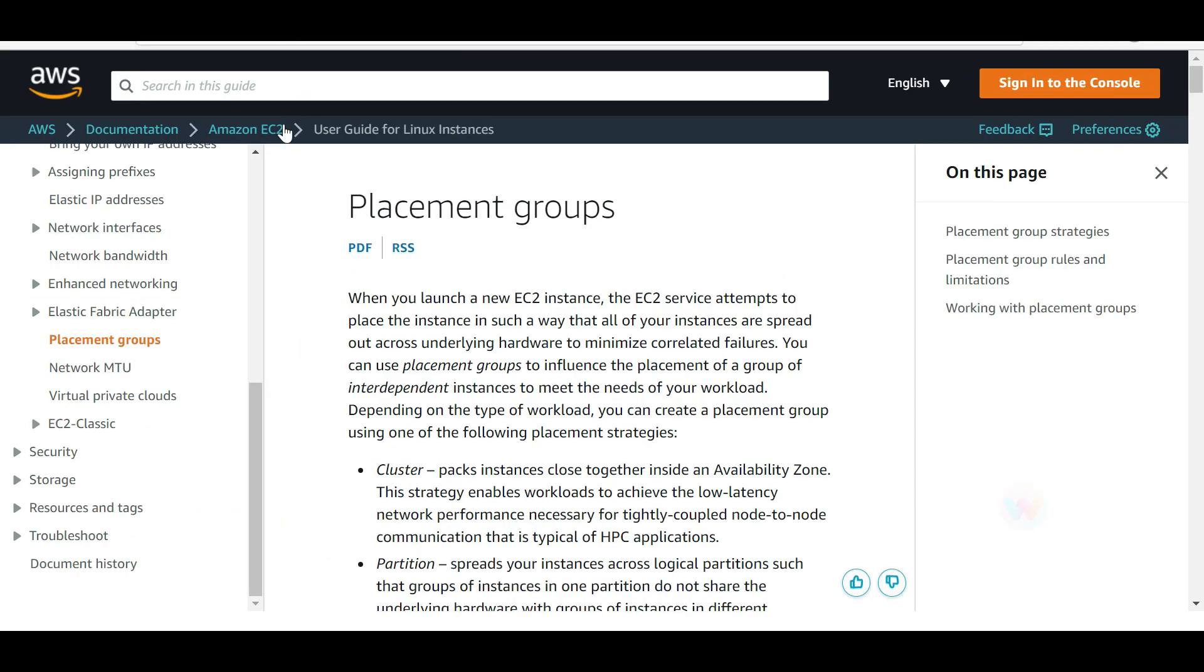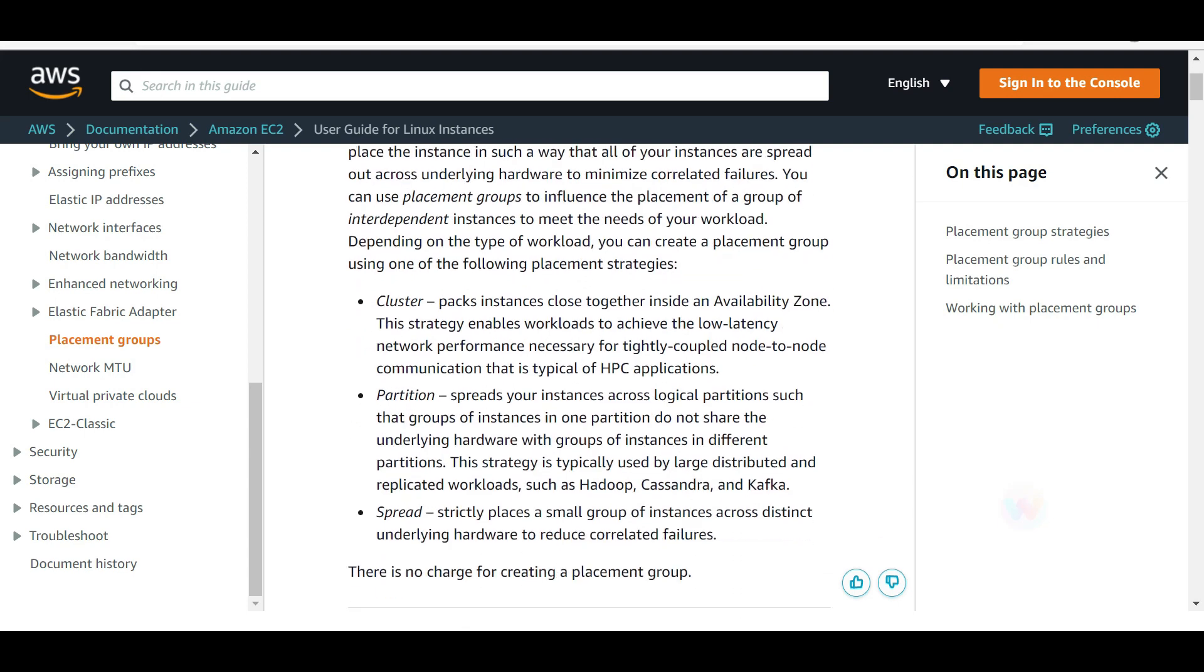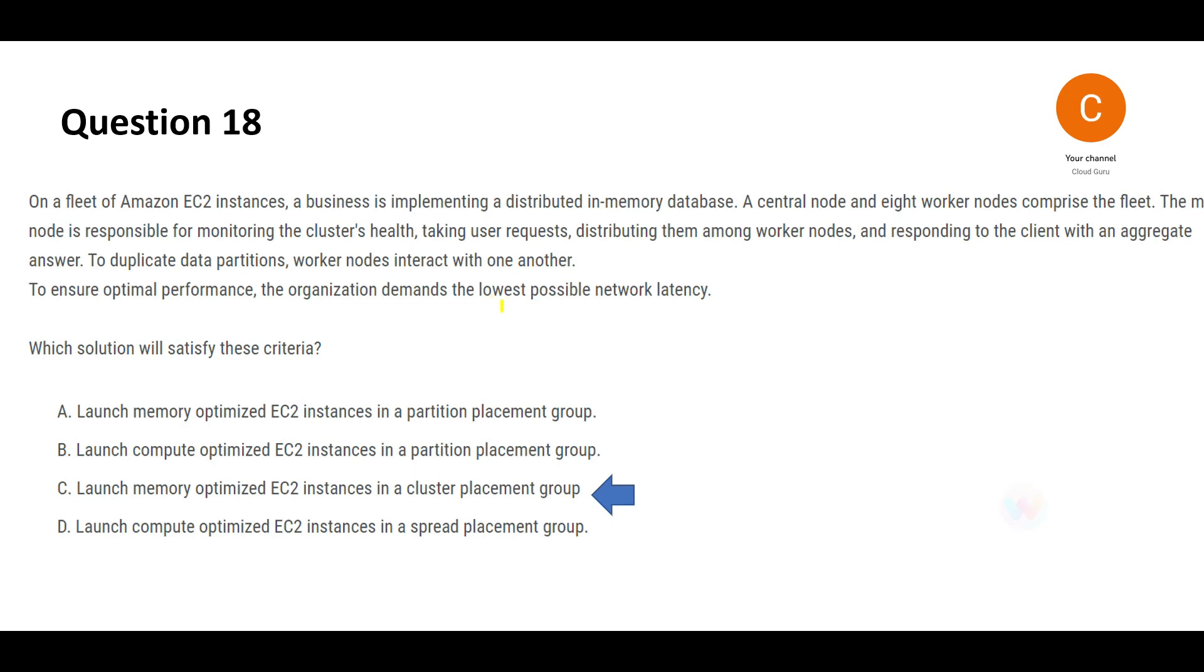If you see this documentation on placement groups, there are three types: cluster, partition, and spread. Please pause this video here to read these descriptions carefully. Like I was mentioning, partition spreads the instances where you do not share the underlying hardware. But cluster packs the instances, creating a package so that all of those components are intact, working with each other, and they are put together inside an availability zone. And this helps you achieve low latency network performance. This is exactly what we need: low latency network performance.